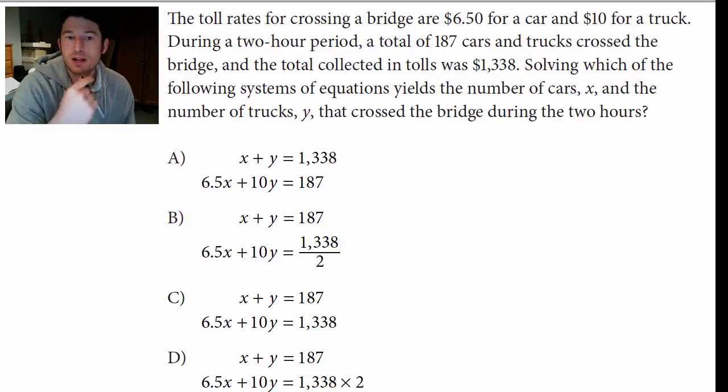The toll rates for crossing a bridge are $6.50 for a car and $10 for a truck. During a two-hour period, a total of 187 cars and trucks crossed the bridge, and the total collected in tolls was $1,338. Solving which of the following systems of equations yields the number of cars, X, and the number of trucks, Y, that crossed the bridge during the two hours?